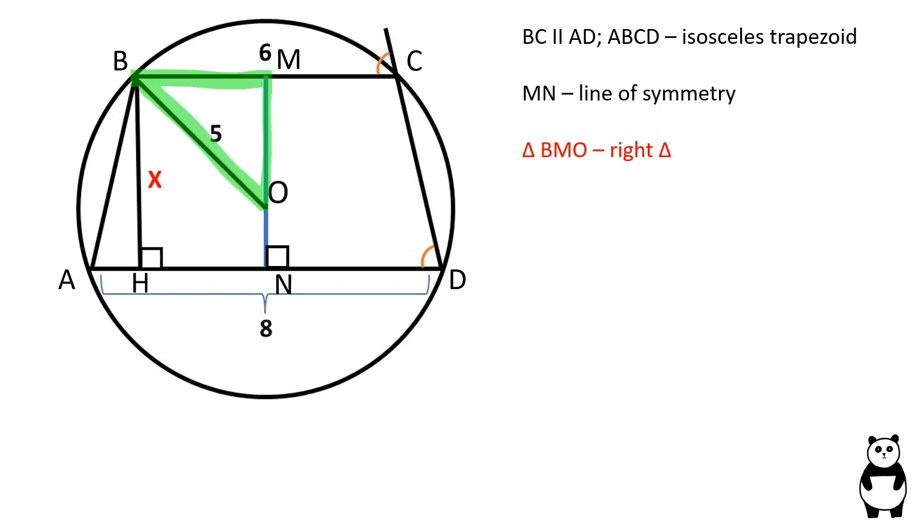Triangle BMO is a right triangle. OB is equal to 5. BM is equal to 3 since M is the midpoint of BC. We can find OM using the Pythagorean theorem. OM is equal to square root of 25 minus 9, which is 4.